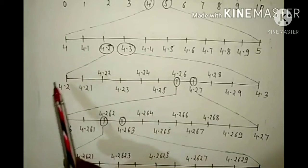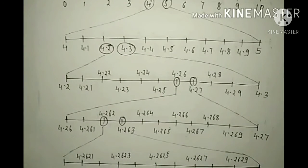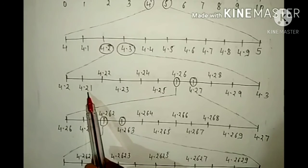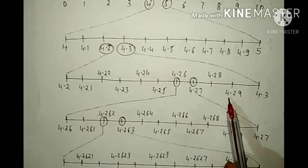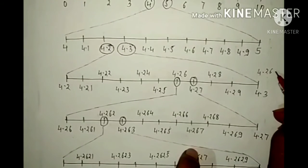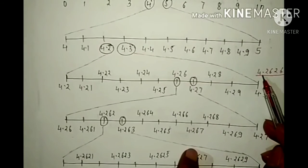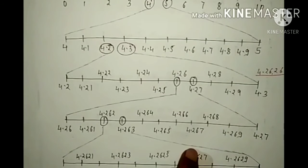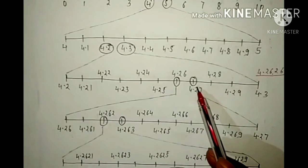Write 4.2 in the left corner and 4.3 in the right corner. Write the middle numbers: 4.21, 4.22, 4.23, and so on till 4.29. Now our number 4.2626 is greater than 4.26 and less than 4.27.